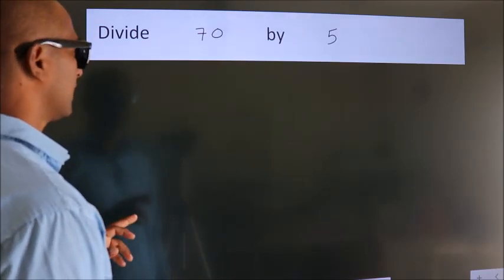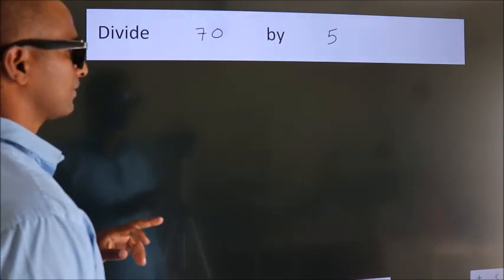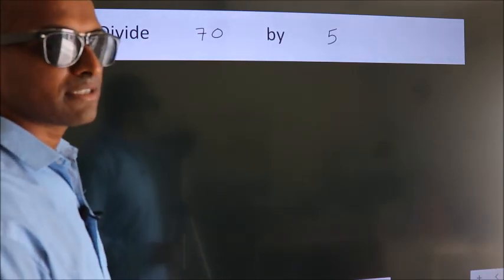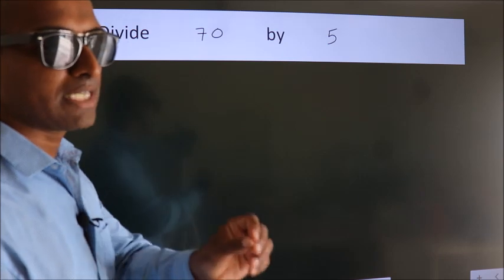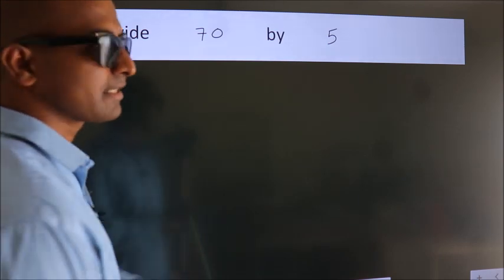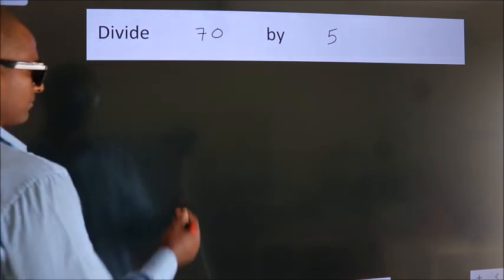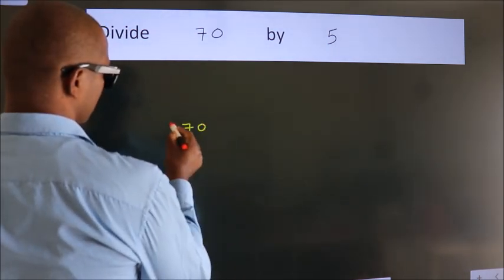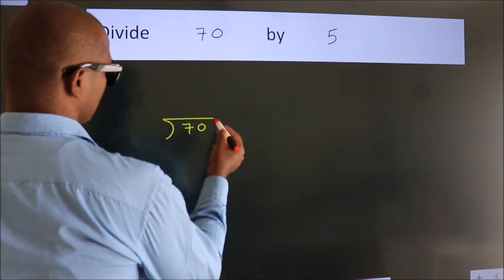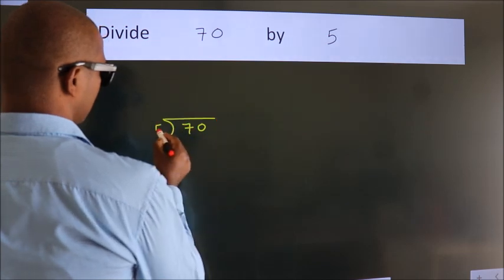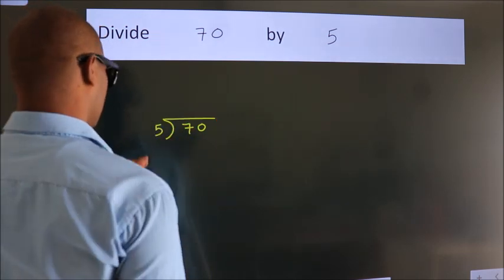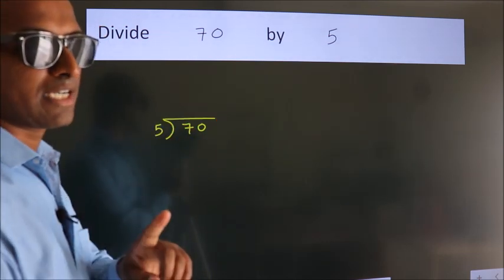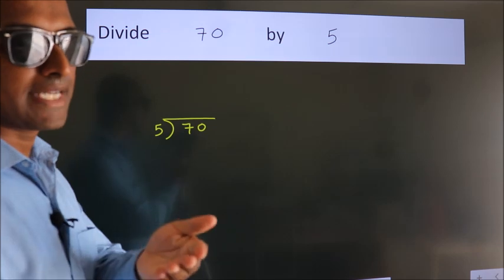Divide 70 by 5. To do this division, we should frame it in this way. 70 here, 5 here. This is your step 1.